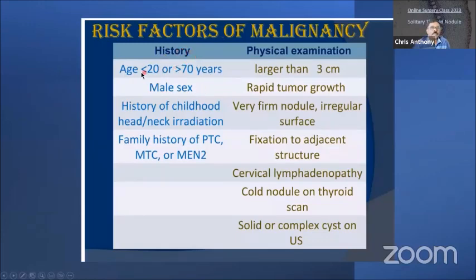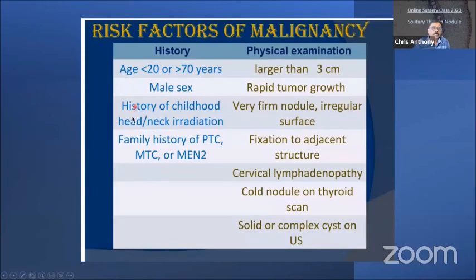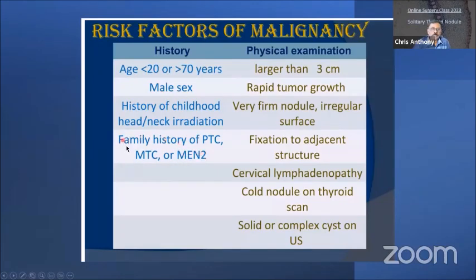The predisposing factors for malignancy are: age less than 20 or above 50–70 (the older, the higher the risk); male sex; history of childhood neck irradiation; family history of papillary thyroid carcinoma or medullary carcinoma; or patients with multiple endocrine neoplasia type 2. On examination, features suggesting malignancy include: larger than 3 cm, rapid growth, firm nodule, irregular surface, fixation to adjacent structures, cervical lymphadenopathy, and on radioisotope scan — a cold nodule.